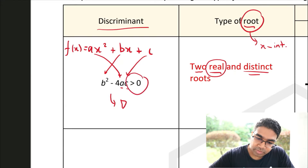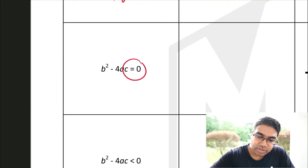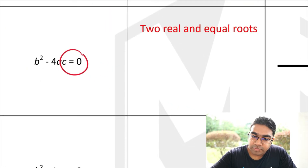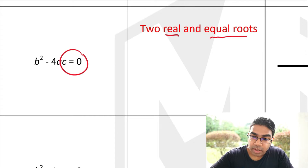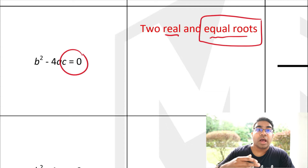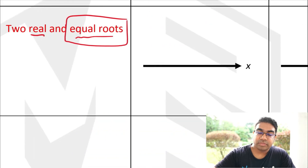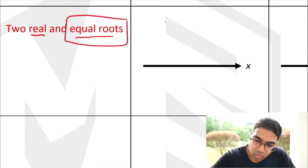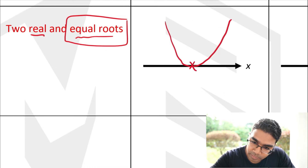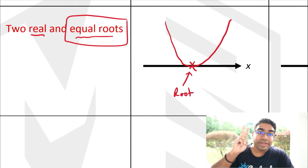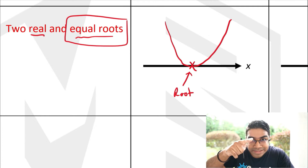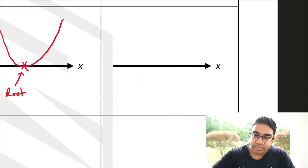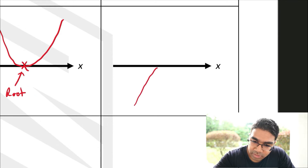When the discriminant is zero, we have two real and equal roots. We still have two roots, but they are equal in value. In the graph, this means we only have one x-intercept — the graph touches the x-axis at exactly one point. When it is a frown, the same applies.